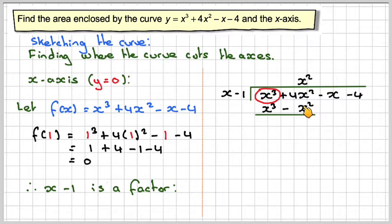So 4x squared minus minus x squared is 5x squared. Bring down the minus x, and then we're going to divide 5x squared by x to get plus 5x. So then 5x times x gives 5x squared, and 5x times minus 1 gives minus 5x.